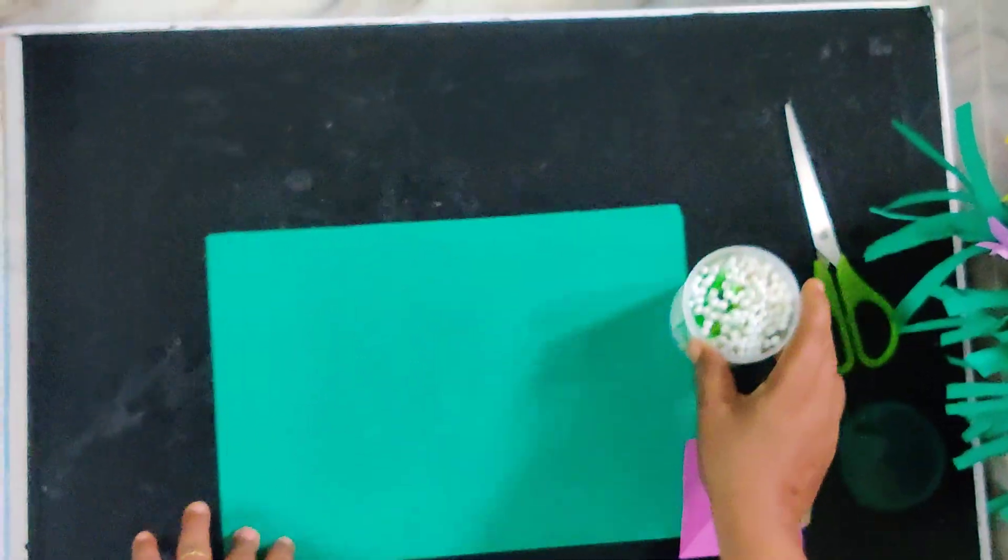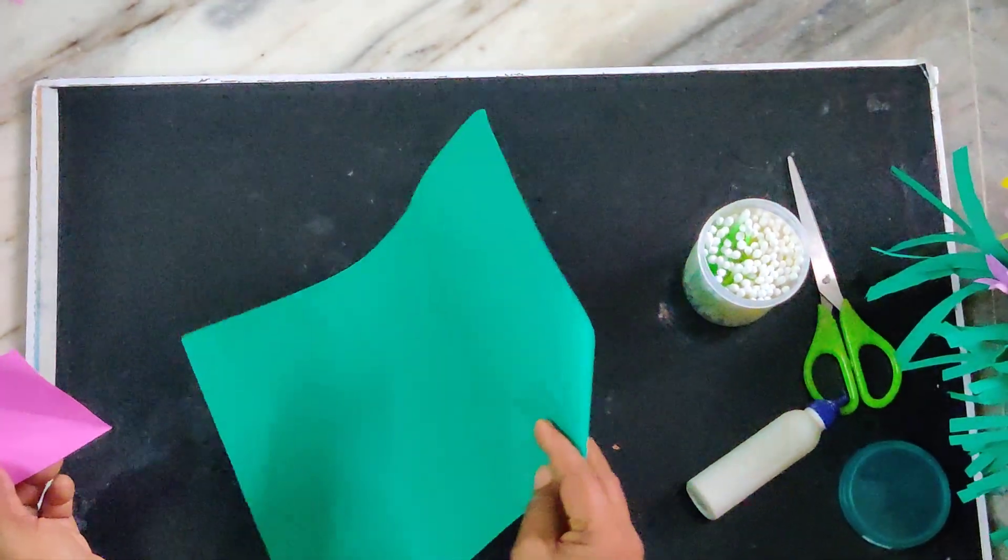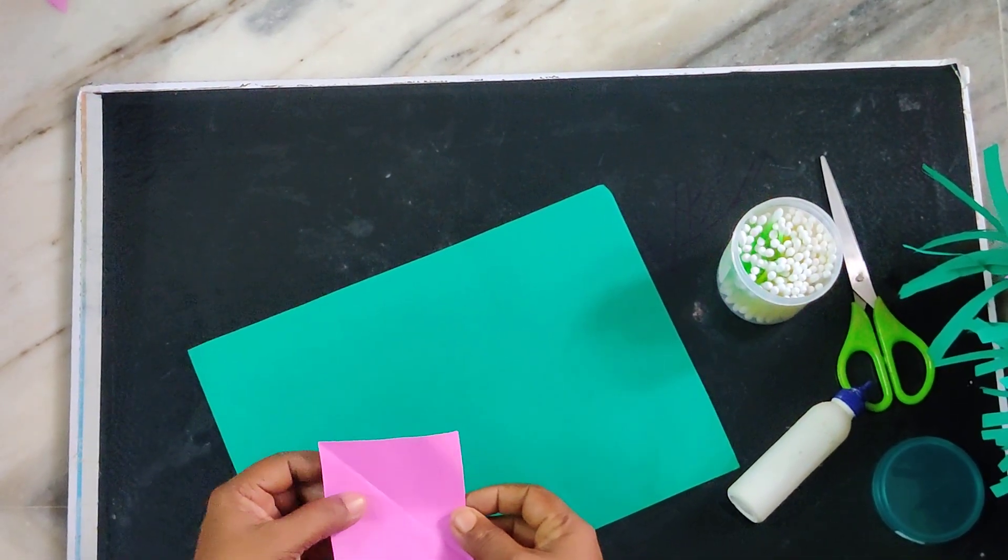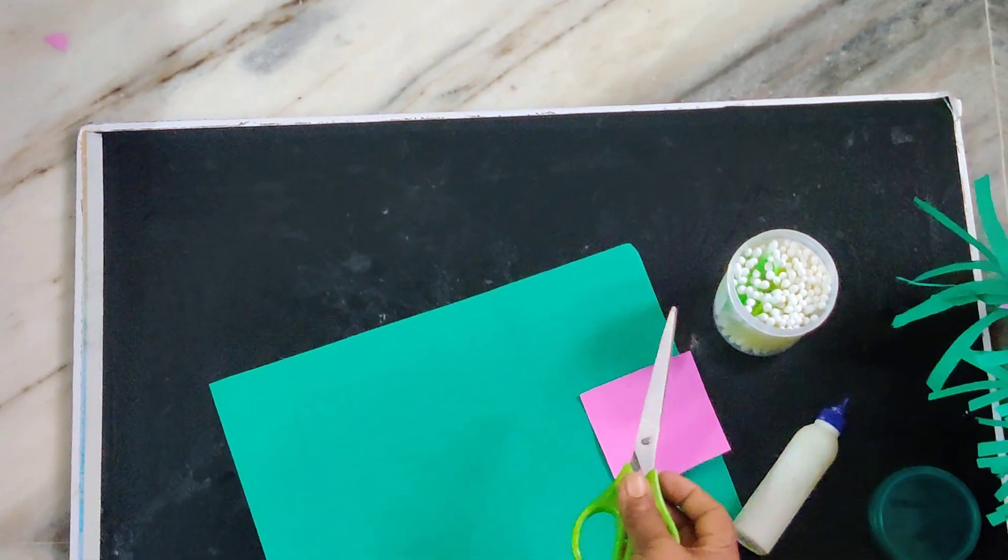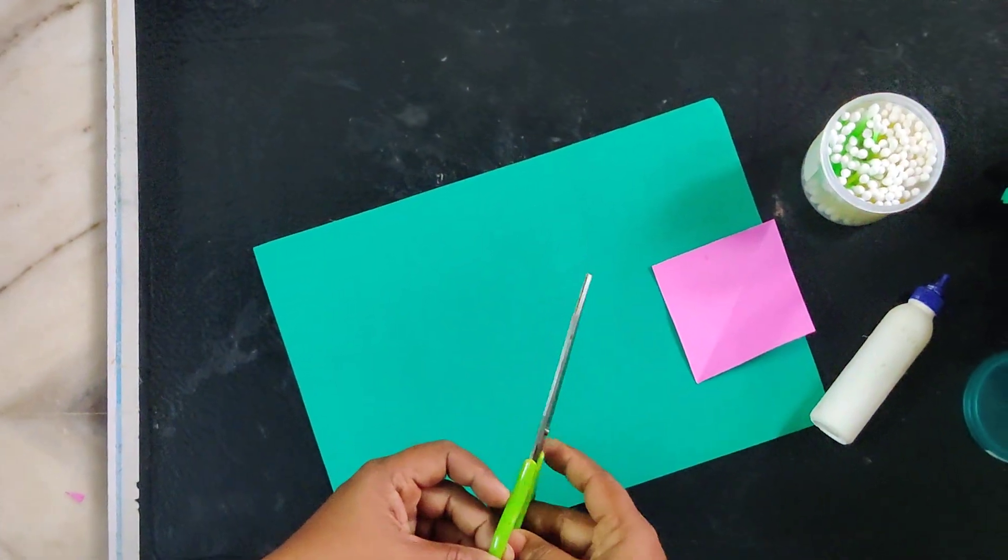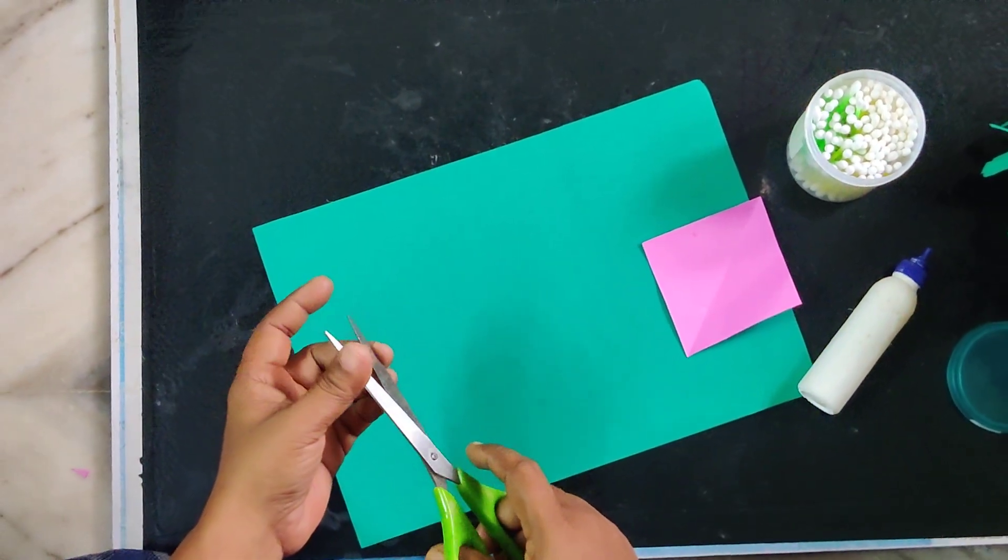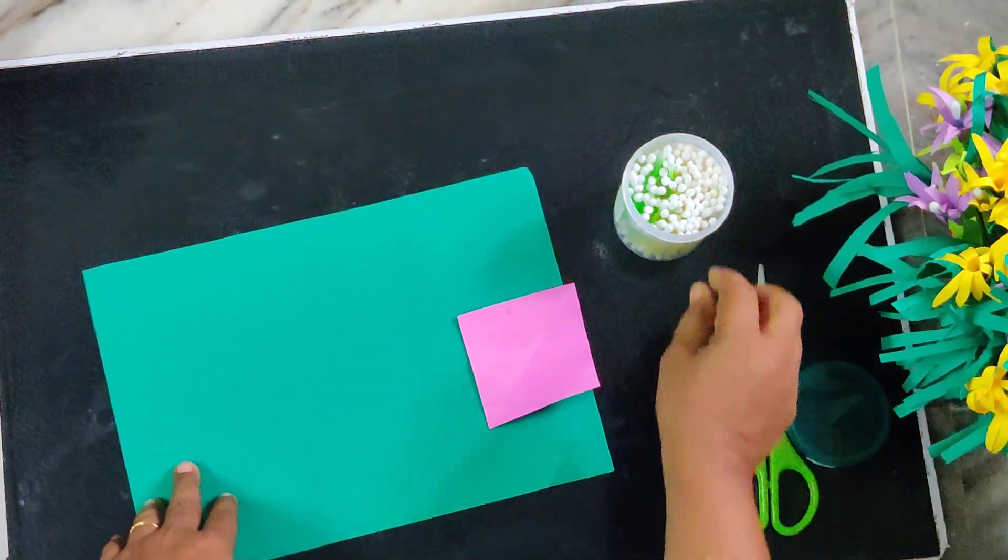Material used: A4 sheet green color, any size square paper. You can prefer 8 x 8 cm square paper. Any color you can use - you prefer December color or yellow color, scissor, gum and ear buds.